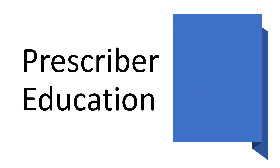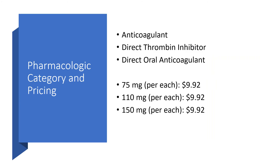Now I will be going over the prescriber education. Pharmacologic category and pricing: Pradaxa is an anticoagulant, a direct thrombin inhibitor, and also a direct oral anticoagulant. The 75 mg, 110 mg, and 150 mg capsules each cost $9.92.